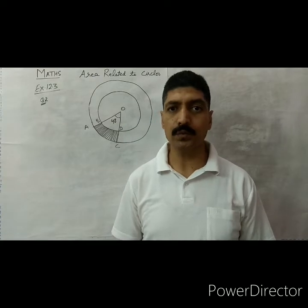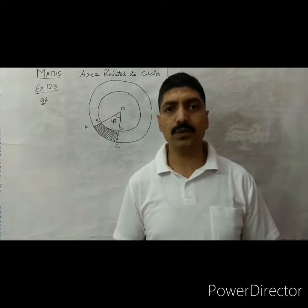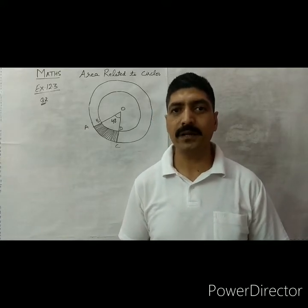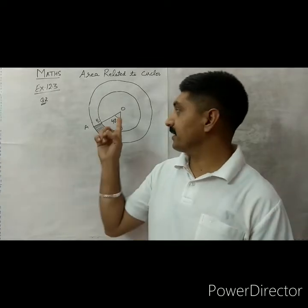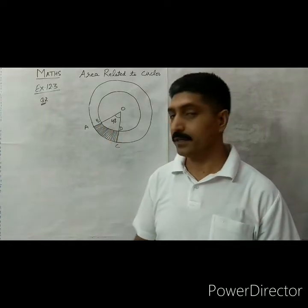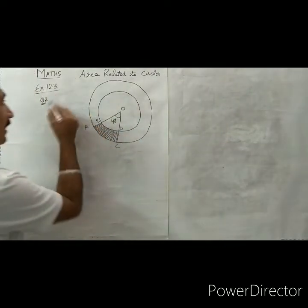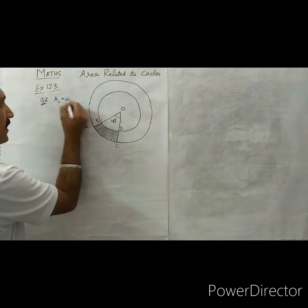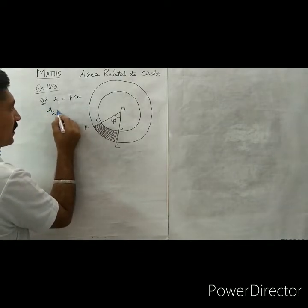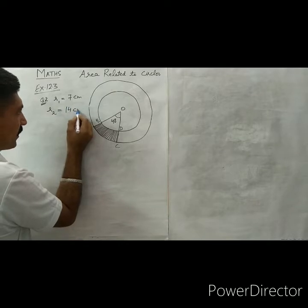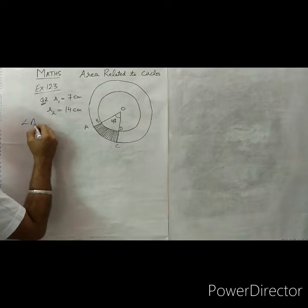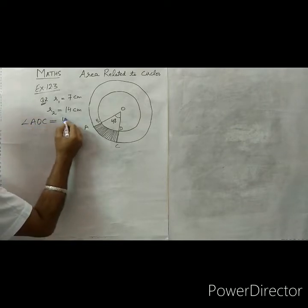Question number 2: we have two concentric circles with radius R1 = 7 centimeter and R2 = 14 centimeter. The angle subtended is 40 degrees, and we have to find the area of the shaded portion. We have angle AOC equal to 40 degrees.